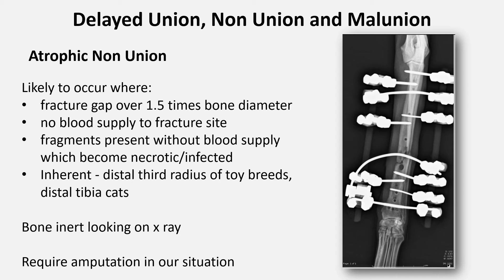Treatment of atrophic non-unions in our situation will mean limb amputation. Surgery to salvage an atrophic non-union is complex and involves reaming the medullary canals, using bone grafts and applying dynamic compression to the fracture site. This image originally had a plate on it but developed a non-union, so revision surgery was done and a rigid external skeletal fixation device was used — taken many weeks after ESF placement, it shows still no real evidence of bone healing. The ESF was too stiff to allow callus development. In our situation this would require amputation, although this animal did eventually go on to heal after a third major surgery.